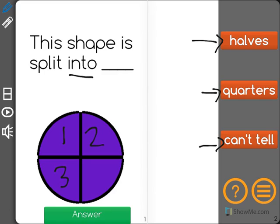One, two, three, four. Okay so my circle is split into four equal pieces.